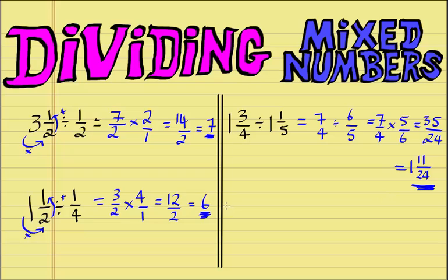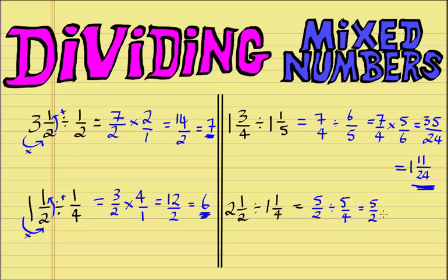One final example of dividing a mixed number by a mixed number. Say if we had 2 and a half divided by 1 and 1 quarter. We convert both to improper fractions: 2 times 2 is 4 plus 1 is 5, so 5 on 2. Then 1 times 4 is 4 plus 1 is 5, so 5 on 4. We keep 5 on 2, change the division sign to multiplication, and flip the second fraction to 4 on 5. 5 times 4 is 20, and 2 times 5 is 10. 20 divided by 10 is simply 2, and that is our final answer.